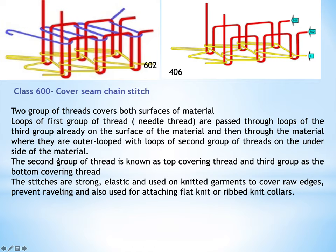The second group of thread is referred to as the looper thread, and the third group is the top covering thread (purple). The needle threads are the two red-colored threads. The second group is also known as the top covering thread covering the needle thread on the top side, and the third group is the bottom covering thread securing the needle loops on the bottom side. These stitches are strong, elastic, and used on knitted garments to cover raw edges, prevent raveling, and for attachment of ribbed knit collars.